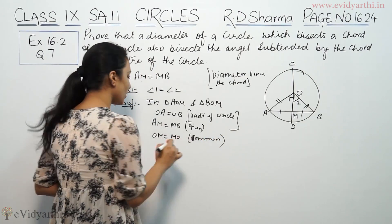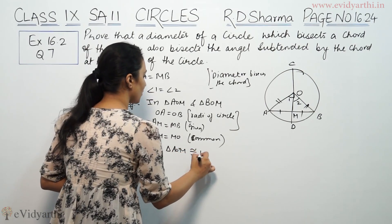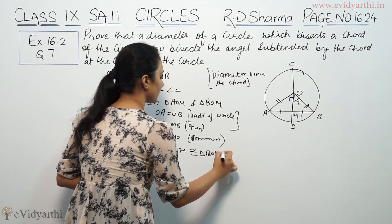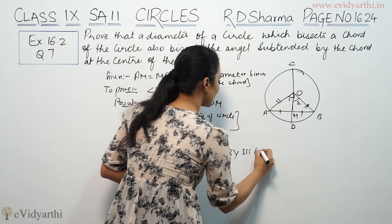So we have two triangles congruent. Triangle AOM is congruent to triangle BOM by SSS congruency rule.